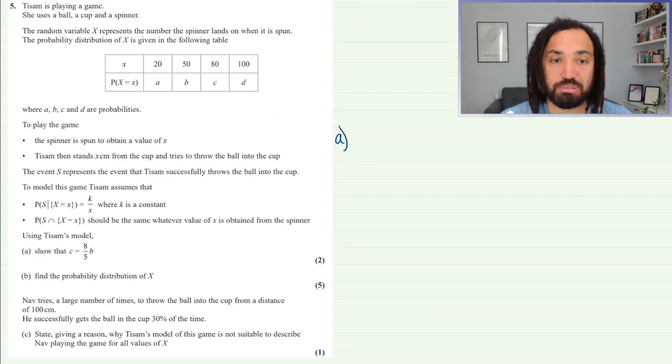Tyson is playing a game. She uses a ball, a cup, and a spinner. The random variable X represents the number the spinner lands on when it is spun, and the probability distribution of X is given by the following table. When the spinner is spun, if it lands on 20 the probability is A. If it lands on 50, probability B. If it lands on 80, C. And if it lands on 100, probability D.